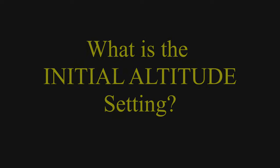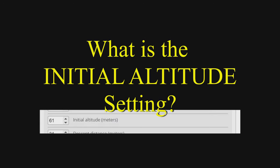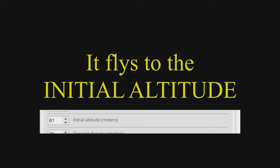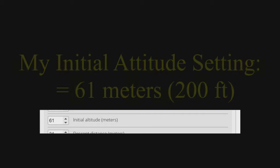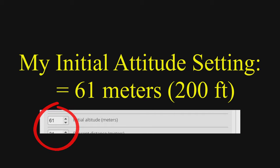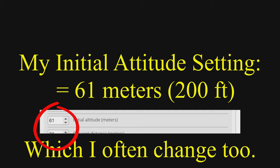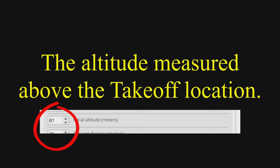First, there is a setting called initial altitude. When GPS rescue mode is activated, your quad will turn towards the home point and attempt to go to this altitude. This is the parameter that defines what that altitude is. During my flights I have it set to 61 meters, or about 200 feet. Remember, this is the altitude as measured from the takeoff point — the home point.